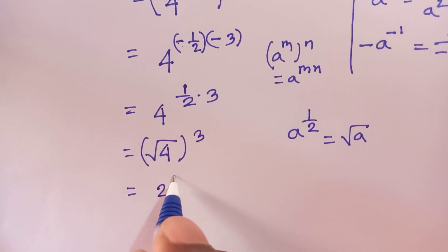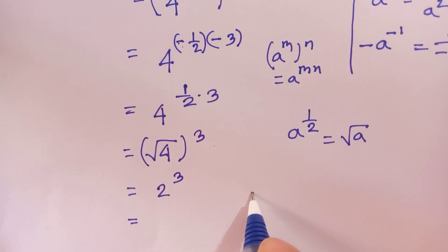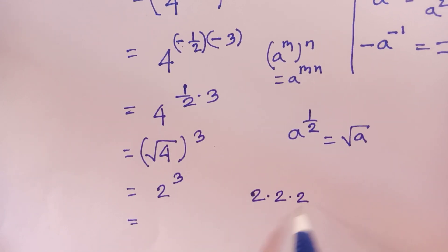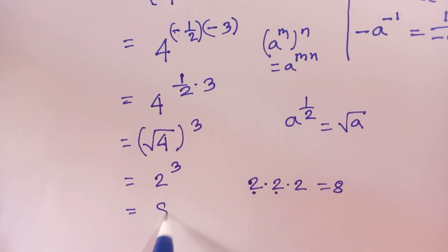And 2^3 is 2 times 2 times 2, which means 2 times 2 is 4, 4 times 2 is 8. So here we will get 8, and this is the value of this equation.